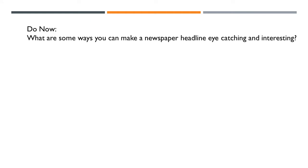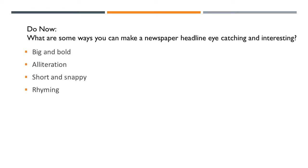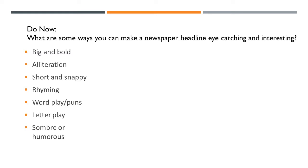So, ways you can make a newspaper headline eye-catching and interesting: you can have a big, bold headline; you can use alliteration; you can have a short, snappy headline; you can use rhyming in your headline; you can use wordplay or puns; letterplay; have an especially sombre or humorous heading — a sombre heading would be one that makes you feel very sad or very serious; and you could use dynamic verbs. If you didn't get these down, please write them down now.